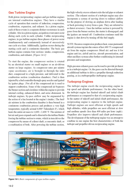The basic gas turbine engine contains four sections: intake, compression, combustion, and exhaust. To start the engine, the compressor section is rotated by an electrical starter on small engines or an air-driven starter on large engines. As compressor RPM accelerates, air is brought in through the inlet duct, compressed to a high pressure, and delivered to the combustion chambers. Fuel is then injected by a fuel controller through spray nozzles and ignited by igniter plugs. Not all of the compressed air is used to support combustion; some bypasses the burner section to provide internal cooling, enhanced thrust, and noise abatement.